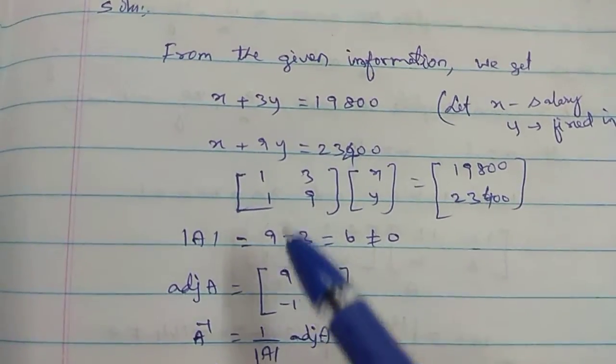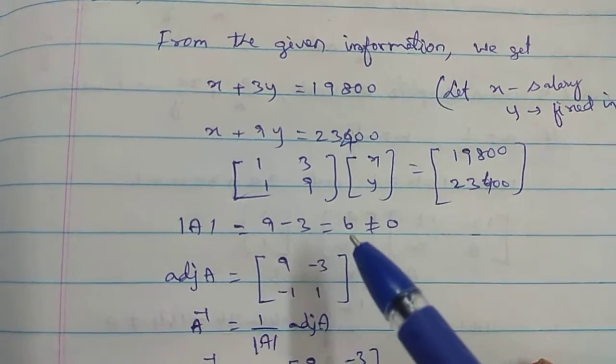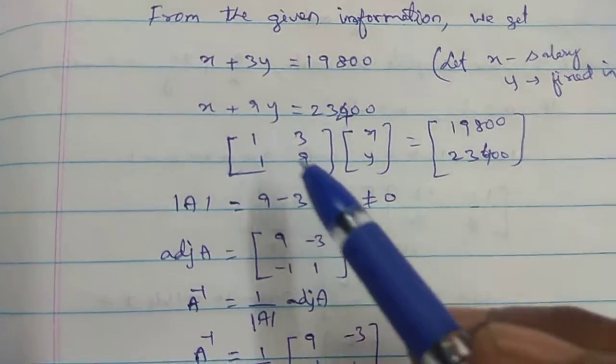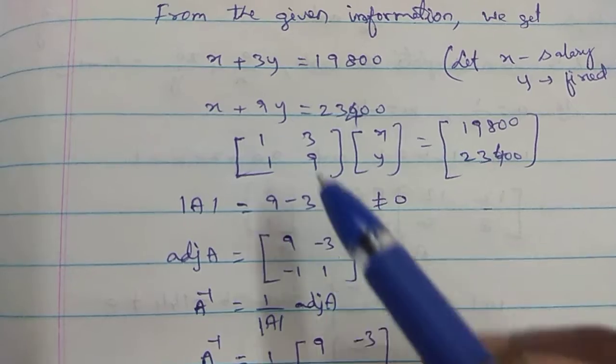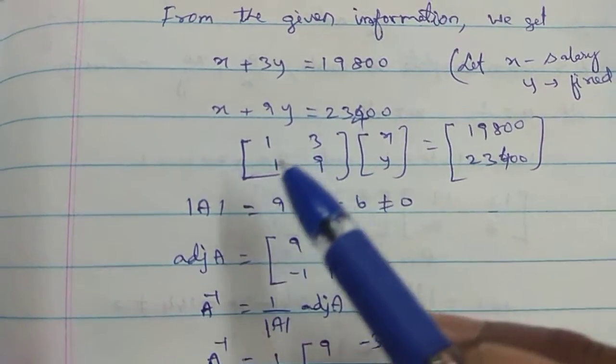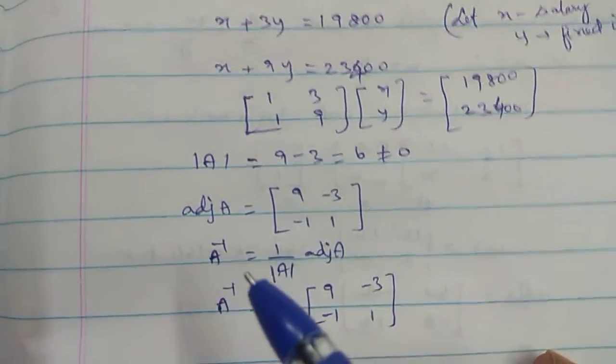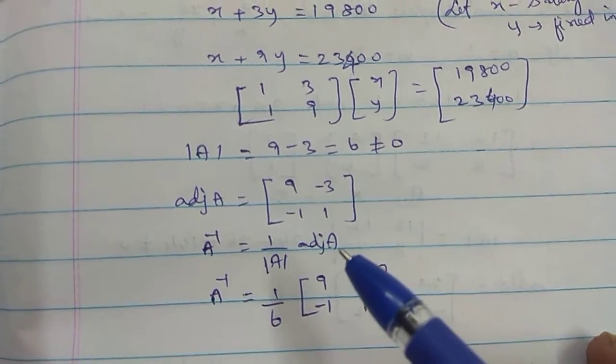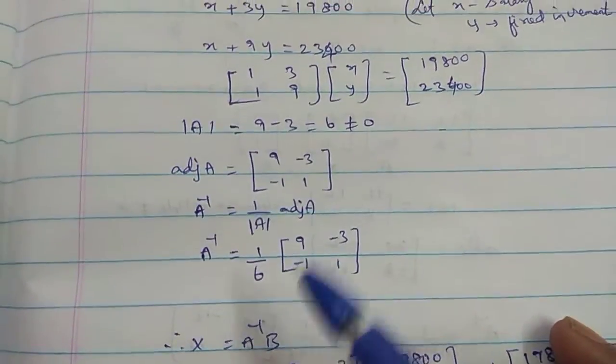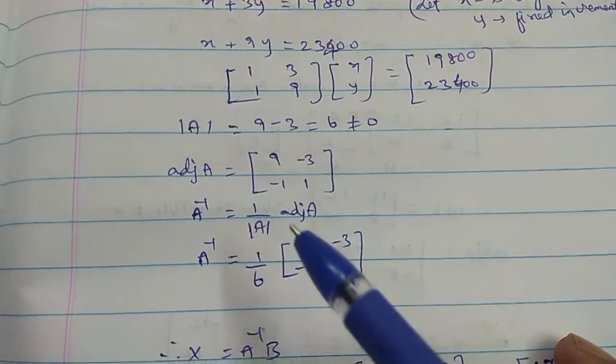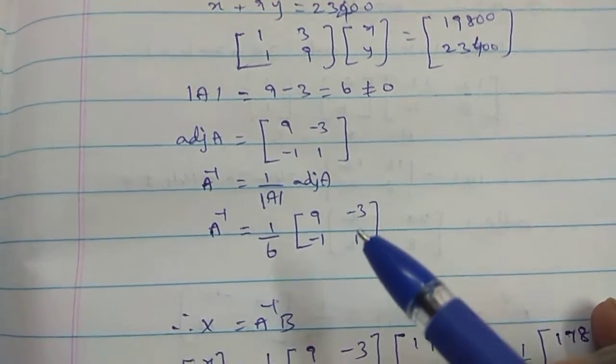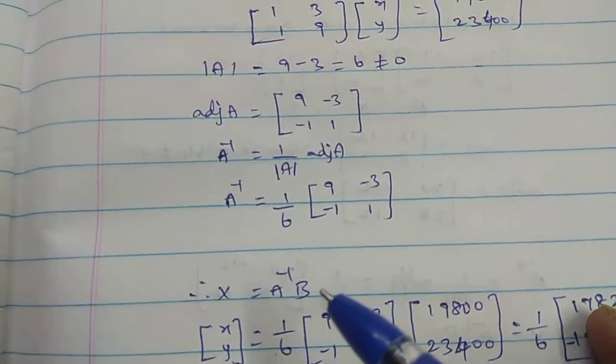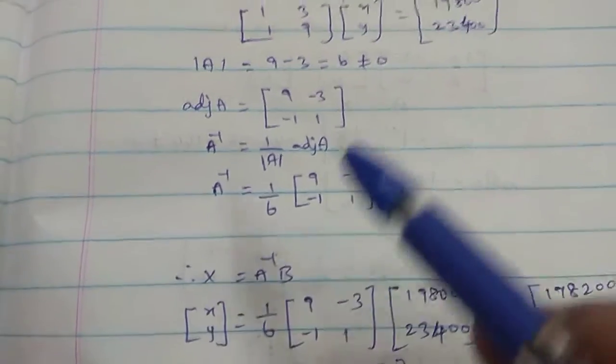Determinant of A: 9 minus 3 equal to 6, which is not equal to 0. Adjoint of A: direct leading diagonal plus another diagonal, sign changing minus 3 minus 1. Inverse equal to 1 by determinant times adjoint of A. 1 by 6 times 9 minus 3 minus 1 1.